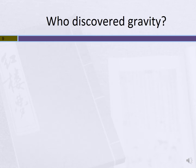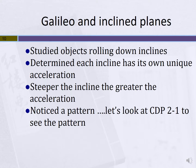So exactly how was gravity discovered? Most people think it was the apple falling from the tree and that Newton figured it out — and the big one is Newton and the apple in the tree. In reality, it was actually Galileo. What Galileo actually did was study inclined planes — just a ramp. He looked at objects as they were rolling down these ramps and determined that each one of these ramps had its own unique acceleration.